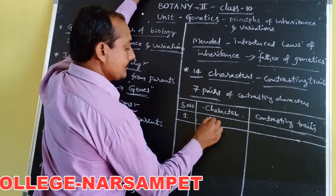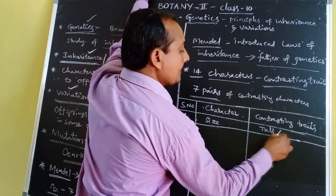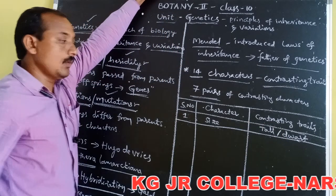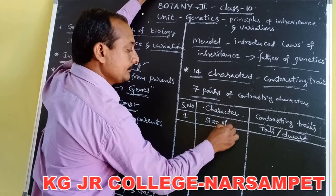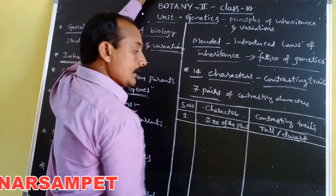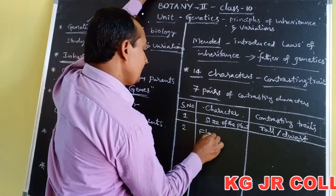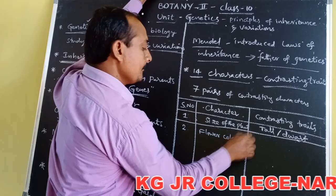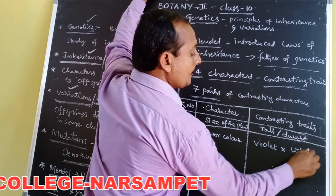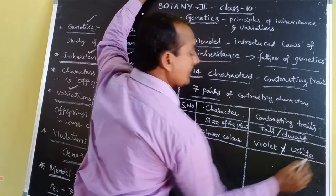The seven pairs of contrasting characters are as follows. First, size of the plant — tall or dwarf. A tall plant is crossed with a dwarf plant. Second, flower color — violet or white. A violet-colored flower is crossed with a white-colored flower.